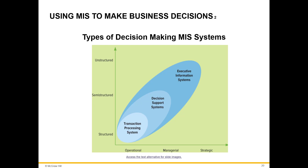This picture shows the three types of MIS to support decision-making across the company levels. These three types include transaction processing system, decision support system, and executive information systems.